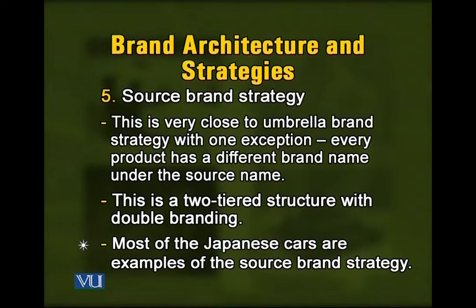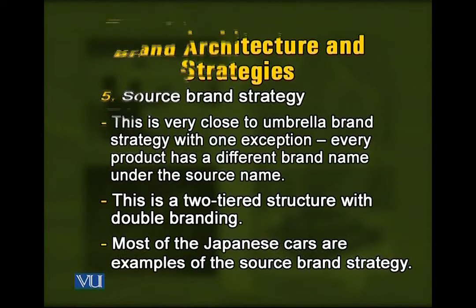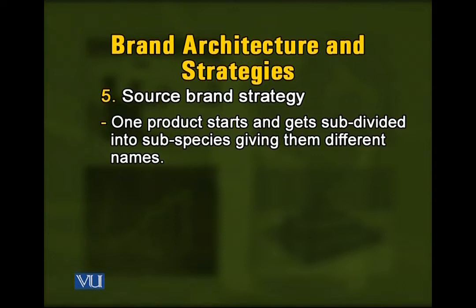The major car manufacturers from Japan — manufacturer T, manufacturer S, or manufacturer H — all have one source brand name, which is a very strong brand name. Under those names, there are many different sub-brands. When a company starts doing business with one brand name, as that brand becomes very strong, it automatically, as a process of evolution, gets subdivided into sub-species, which are defined as different sub-brands.